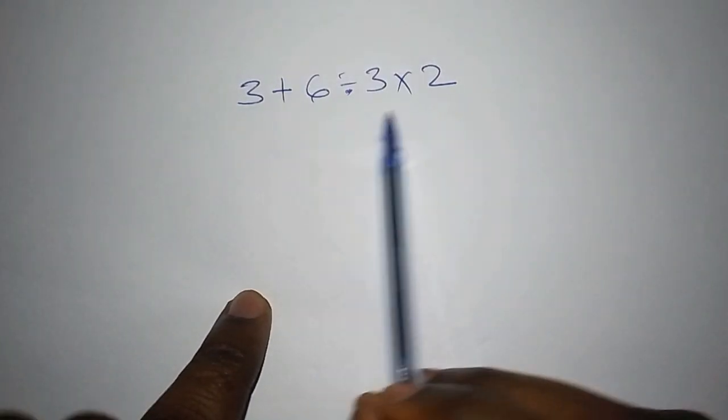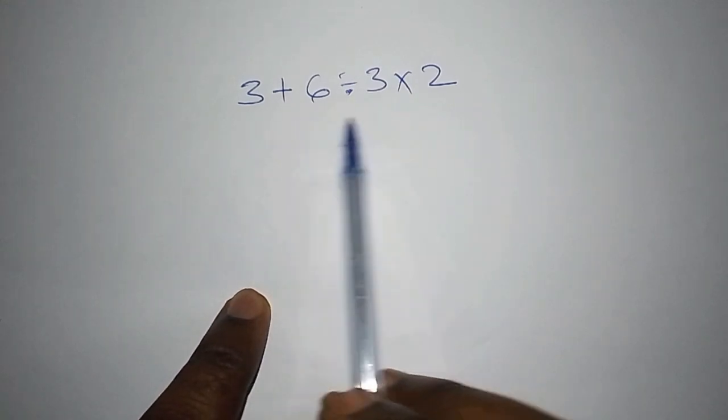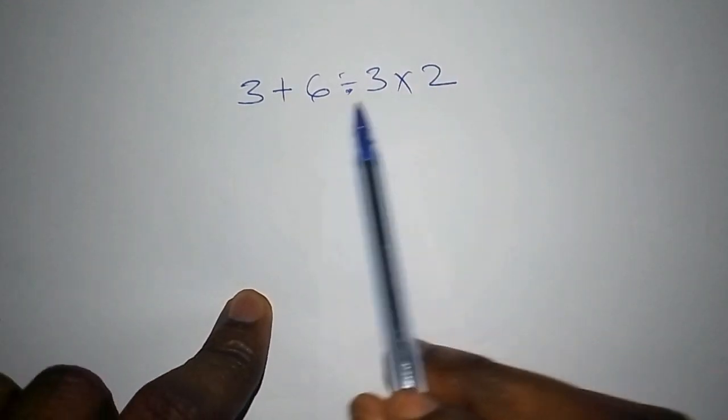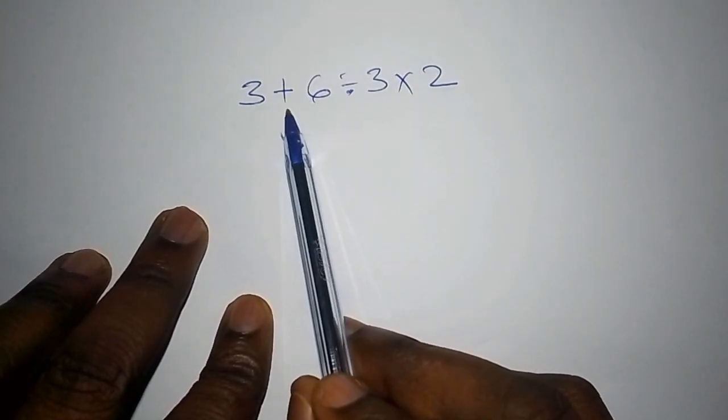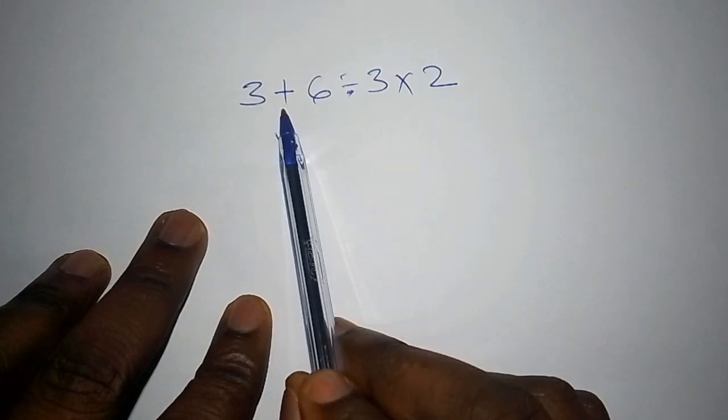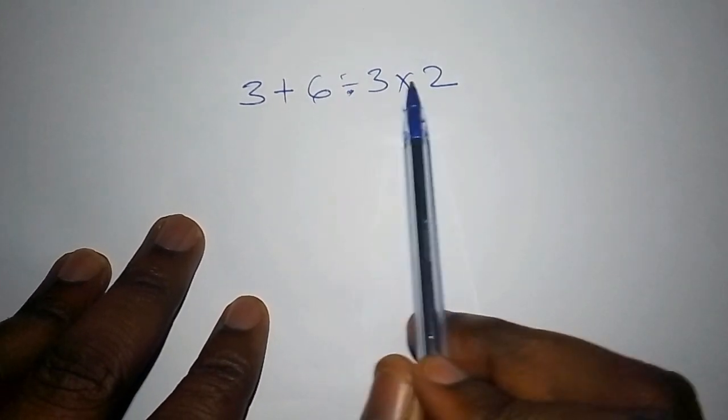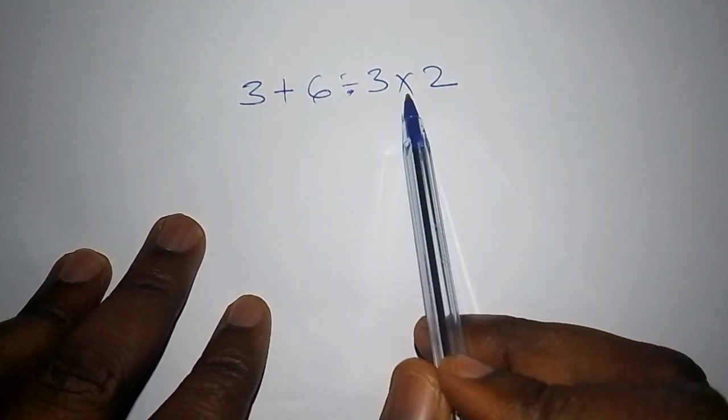Hello everyone, do you know that 90% of people make mistakes when working out this combined operation math problem that has different operations? We have addition, division, and multiplication.